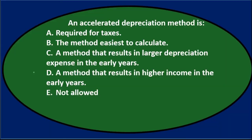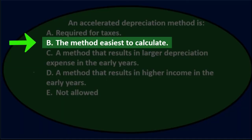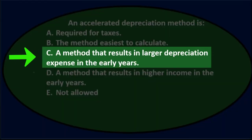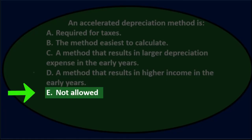Next question. An accelerated depreciation method is A. required for taxes, B. the method easiest to calculate, C. a method that results in larger depreciation expense in earlier years, D. a method that results in higher income in early years, E. not allowed.